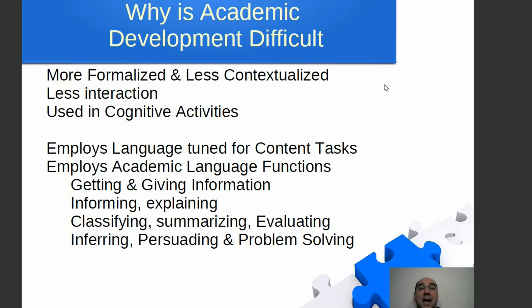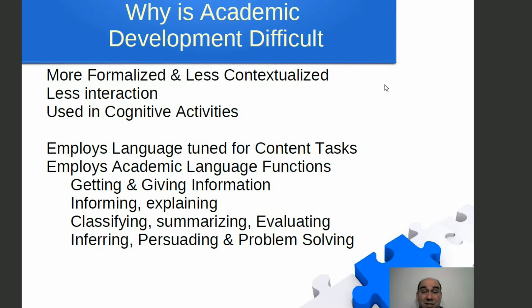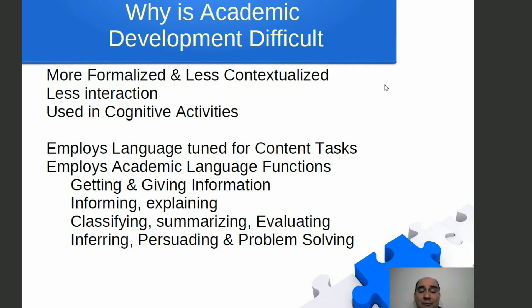Why is it that academic language development is difficult for second language learners? The most logical approach is to look at what things you actually do with academic language — they're not things that require motion. You're sitting, you're listening, you're trying to pay attention, so a lot of it is cerebral — cognitive activities. There's actually less interaction in a typical academic setting, and so because it's more difficult to simply understand what's going on as opposed to seeing others do it and follow along, it's going to be more difficult for second language learners.